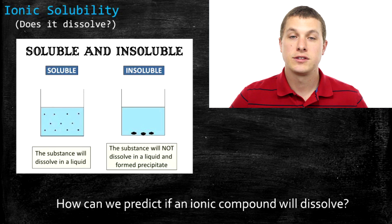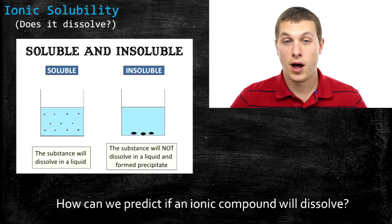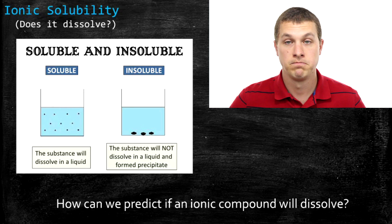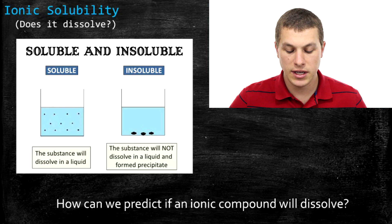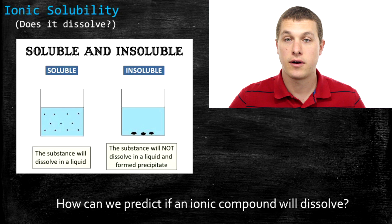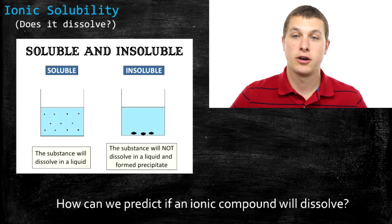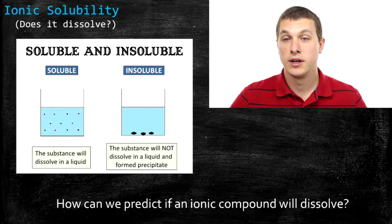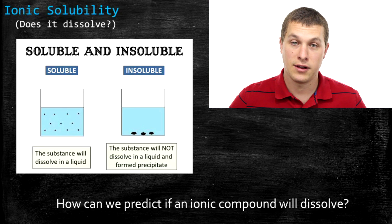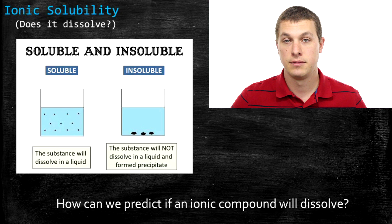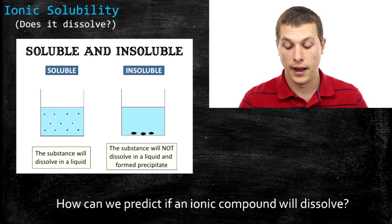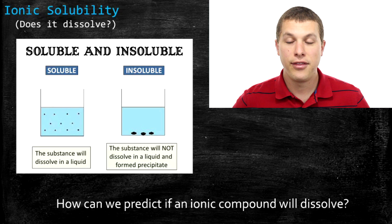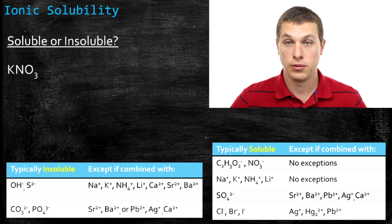On the other hand, there are a lot of compounds that if I put them into water, they'll just sink to the bottom and they won't dissolve. Those are insoluble. So we can divide all of our ionic compounds into two categories: soluble if they dissolve in water and insoluble if they don't. And what we want to do is, without going into the lab and testing it, we just want to be able to predict — will this thing dissolve or not? And the way we do that is with solubility tables.